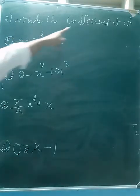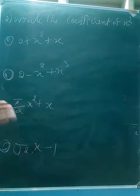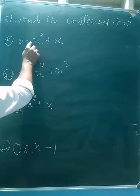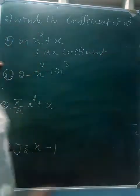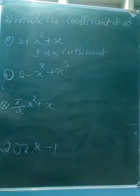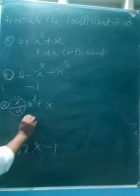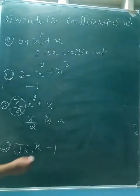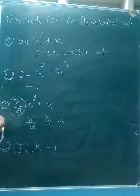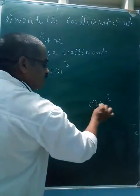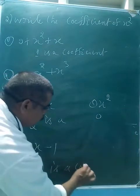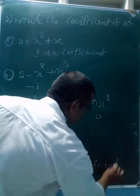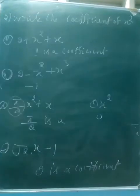Second question: write the coefficient of x². The coefficient is the numerical coefficient. For the first one, 1 is the coefficient. For another, −1 is the coefficient. For the next, 5/2 is the coefficient. For x square with no visible term, zero is the coefficient. Zero is the coefficient — the product is the coefficient.